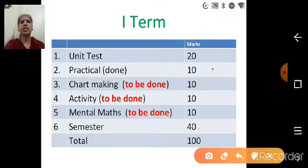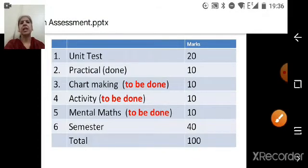Practical which is done. Done means the practical was given to you in the month of June. It was on squares and cubes, remember? So that practical you are going to submit, time for submission has come. Then we are having chart making, activity, mental max and semester. So this is regarding our first term marks, that is assessment.